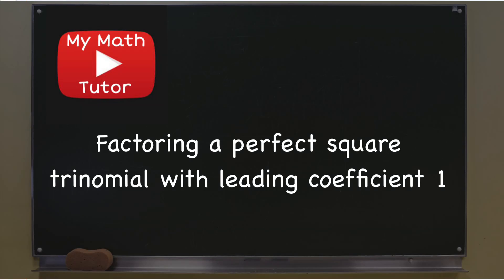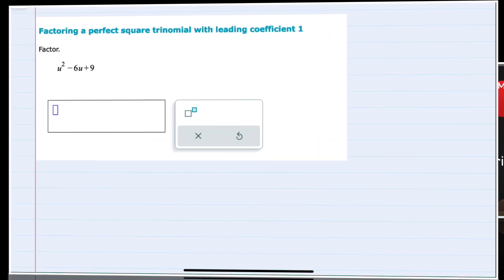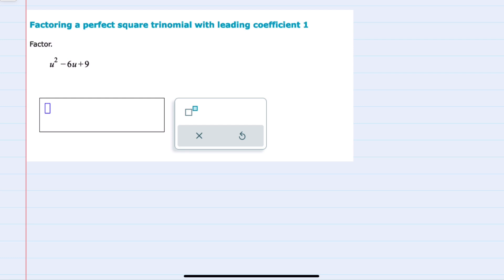In this video, I'll be helping you with the Alex problem type called factoring a perfect square trinomial with leading coefficient 1. In this example, we're asked to factor u squared minus 6u plus 9. And as described, this is a perfect square trinomial.